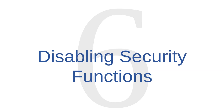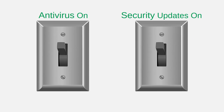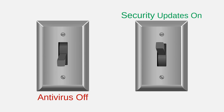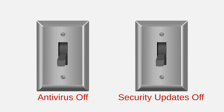Malware function number six is disabling security functions. Some malware programs can disable security functions on a computer — for example, it could disable antivirus software, or it could block the system from installing security patches. Malware that disables security functions tends to last longer because there aren't any security functions left to stop it, and these programs also tend to leave computers more vulnerable to other malware infections from other sources.